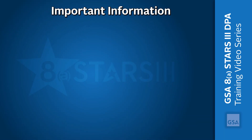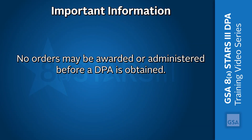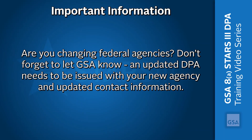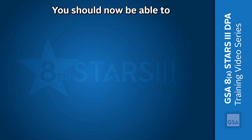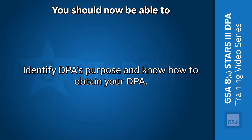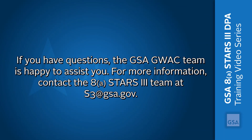Congratulations! Here are a few important points to remember. No orders may be awarded or administered before a DPA is obtained. Are you changing federal agencies? Don't forget to let GSA know — an updated DPA needs to be issued with your new agency and updated contact information. Obtaining a DPA is your first step in using GSA's GWACs to streamline the acquisition process for IT services and IT services-based solutions. You should now be able to identify the DPA's purpose and know how to obtain your DPA. If you have questions, the GSA GWAC team is happy to assist you. For more information, contact the 8STARS III team at s3@gsa.gov. Thank you!